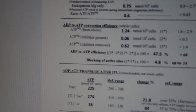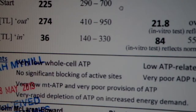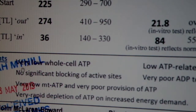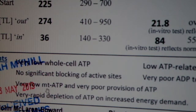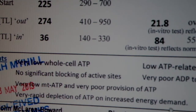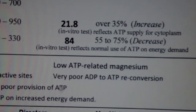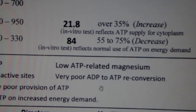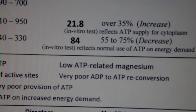Zooming into the comments section: it reads very low whole cell ATP, very low mitochondrial ATP, and very poor provision of ATP. Down here it says very rapid depletion of ATP on increased energy demand, low ATP-related magnesium, and very poor ADP to ATP reconversion. So that's all the currency of energy.